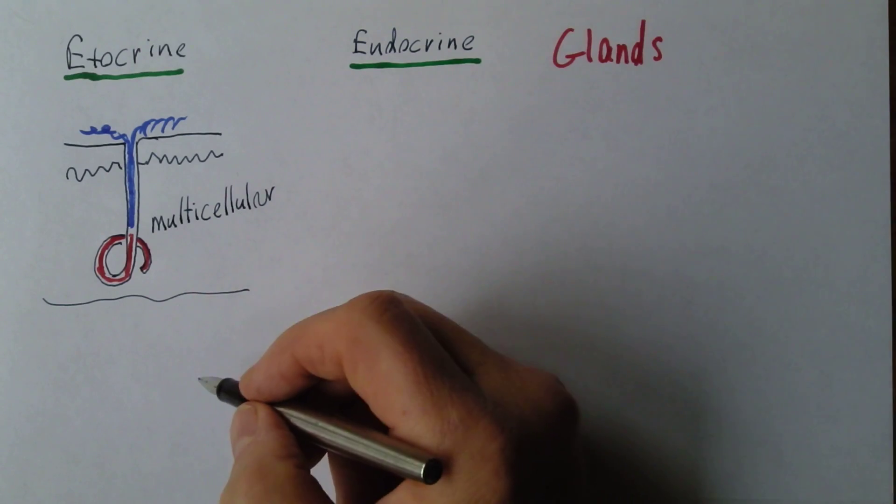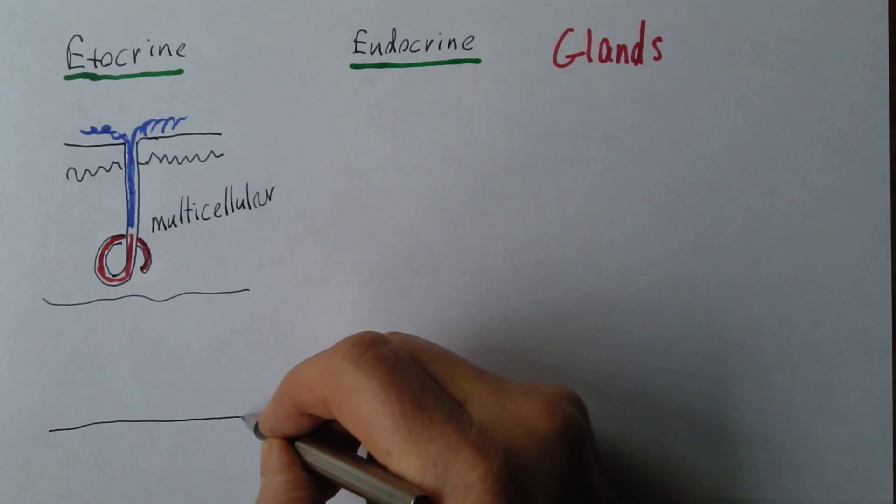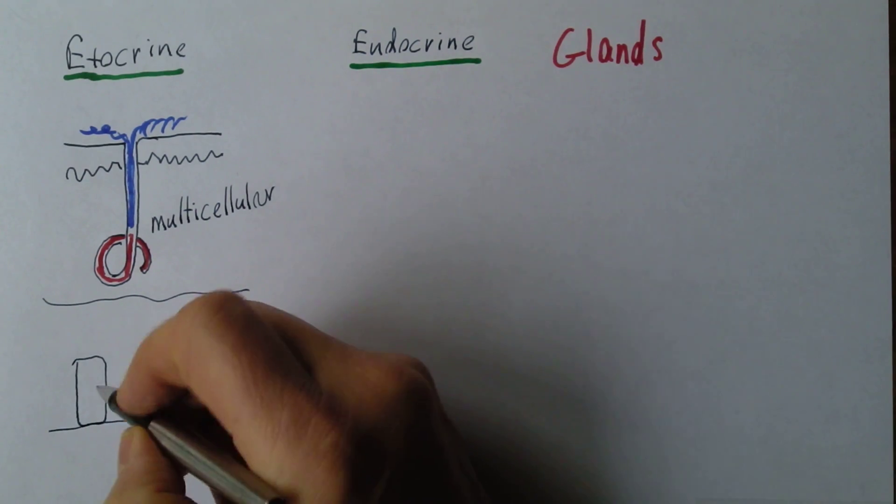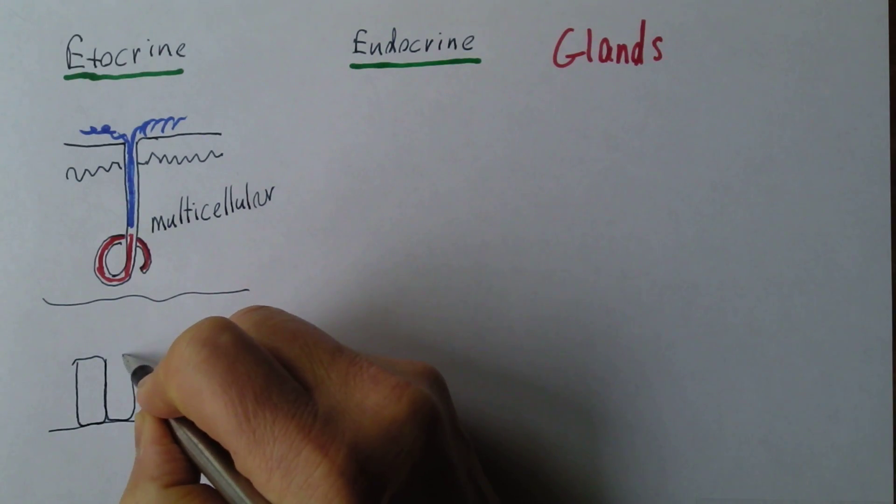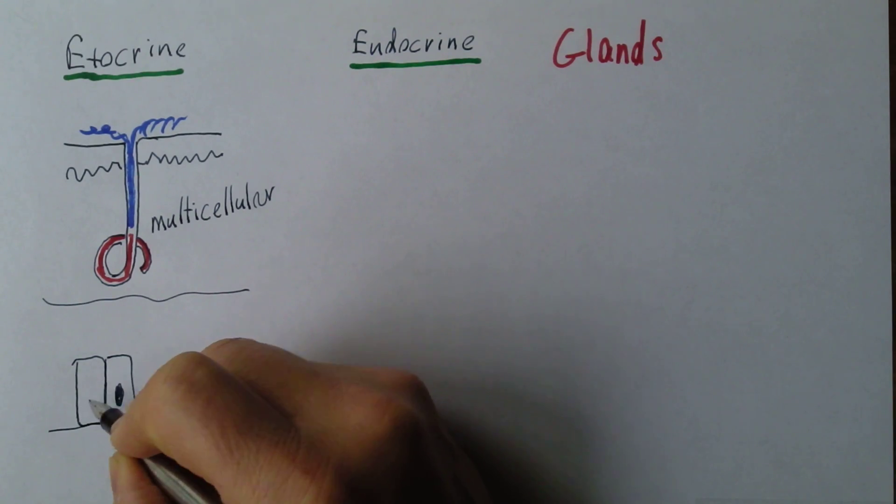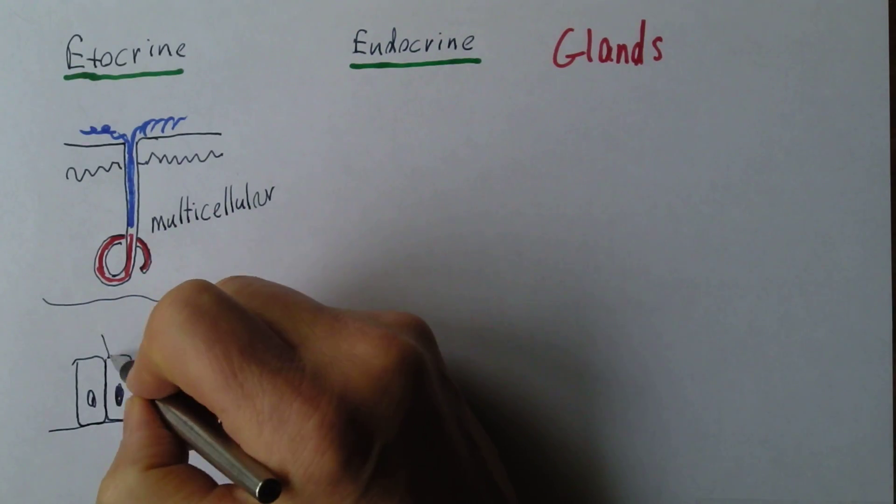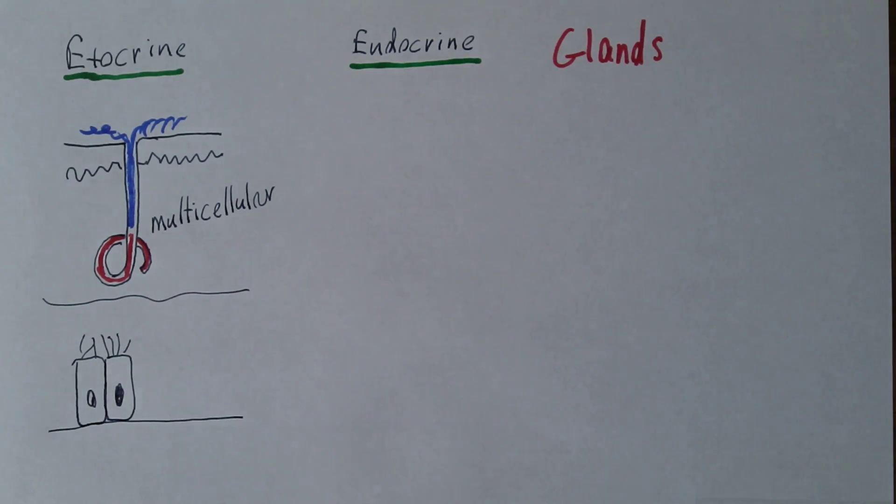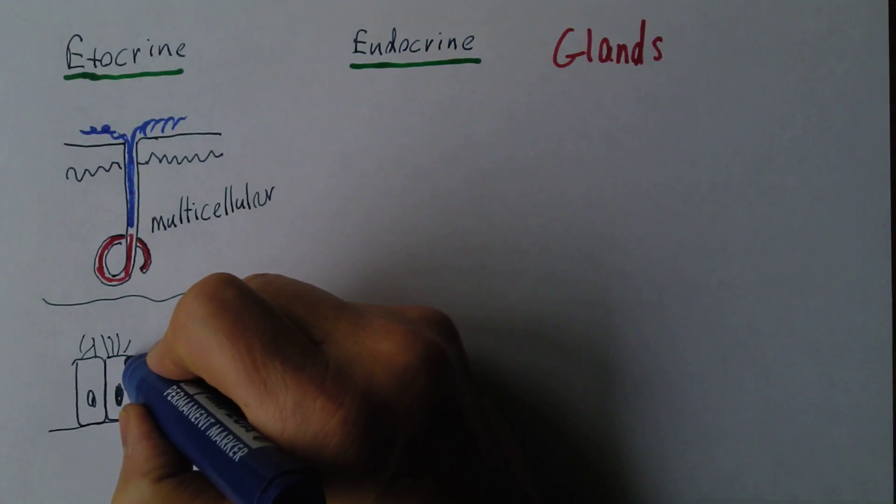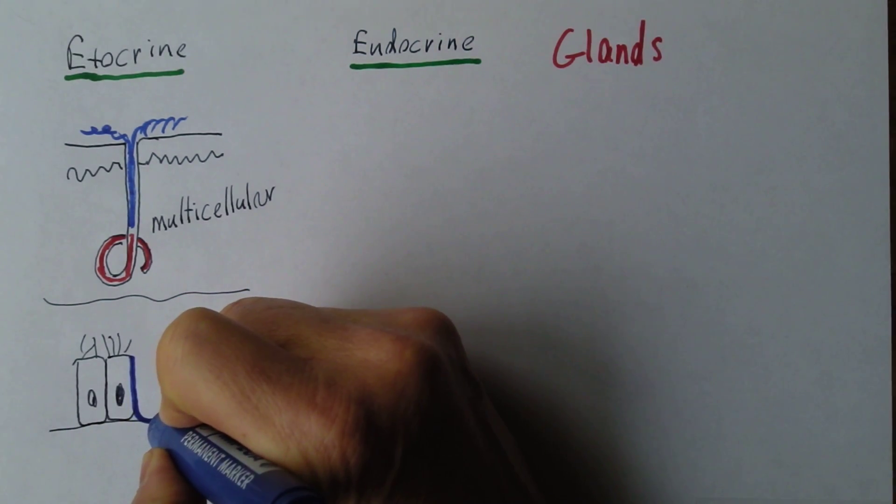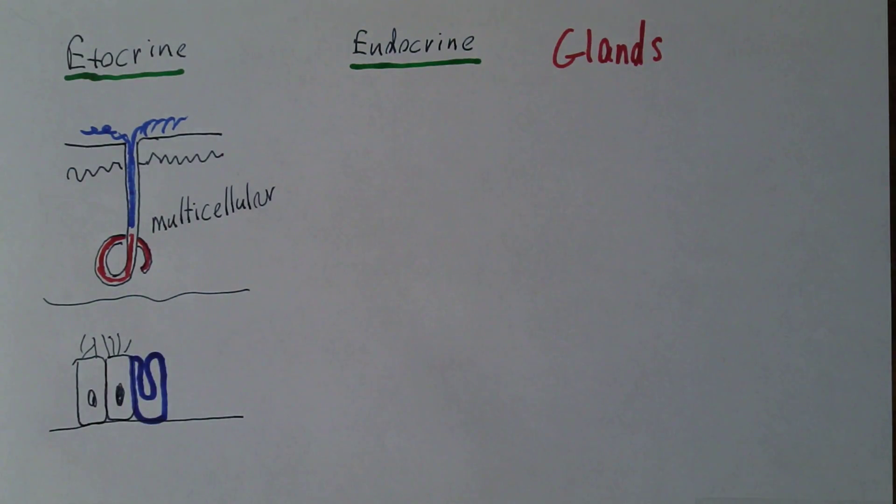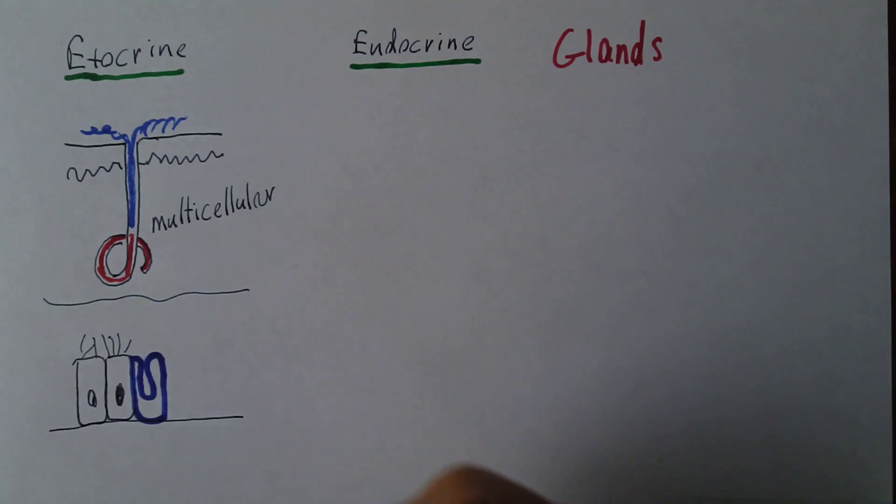But other exocrine glands are simple single cells. So if we consider the respiratory epithelium, for example, made of columnar cells with a nucleus and the cilia perhaps on the top, then every so often there'll be a different type of cell. And when people first started looking at these types of cells, they thought it looked a bit like an upside-down old-fashioned drinking vessel called a goblet.